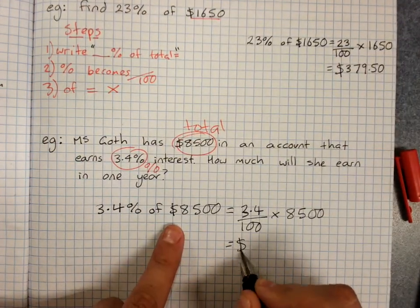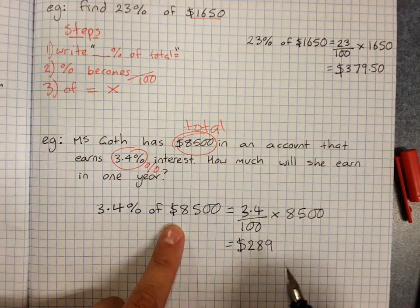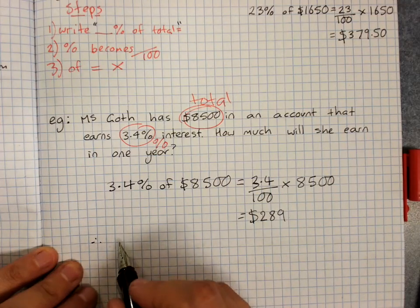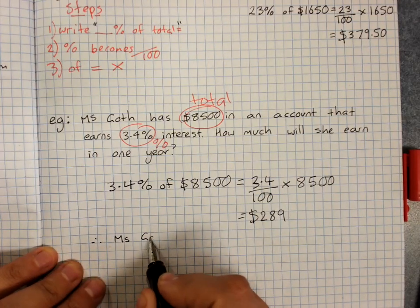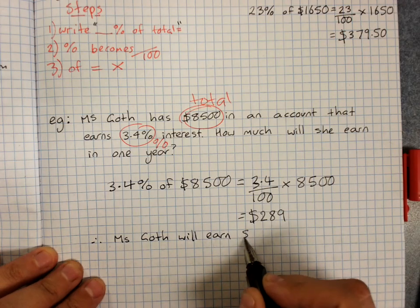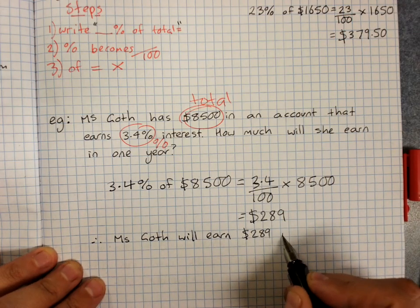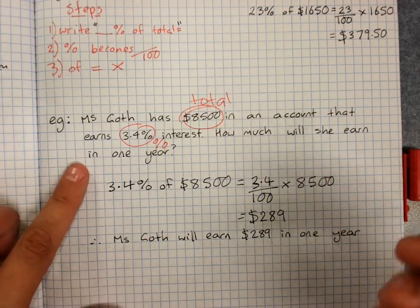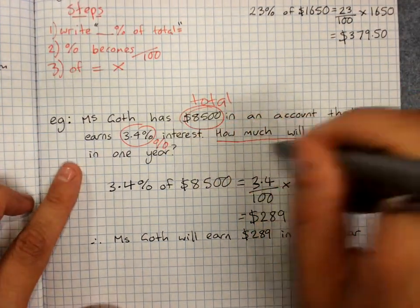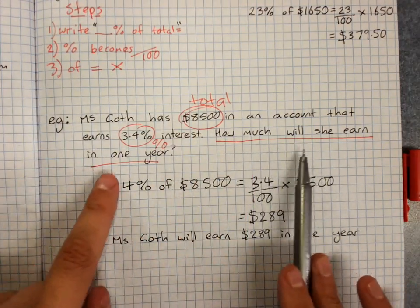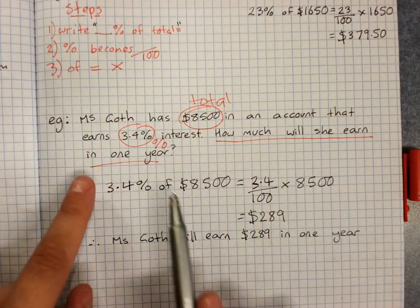And because it was money we say $289. And because it was a word question we say therefore Ms. Gough will earn $289 in one year. And we know to write that because the question asked how much will she earn in one year.